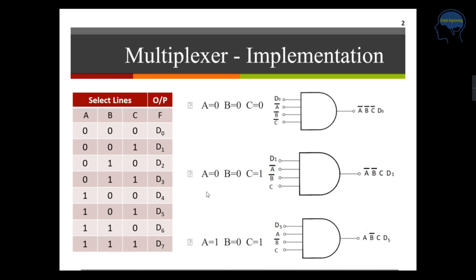Considering different combinations: the first is when A equals 0, B equals 0, and C equals 0 — that is all select lines at 0. At that time the output selects D0. So A=0 means A-bar, B=0 means B-bar, and C=0 means C-bar. When the condition is A-bar, B-bar, C-bar, input line D0 is selected and transferred to the output, giving output A-bar · B-bar · C-bar · D0.